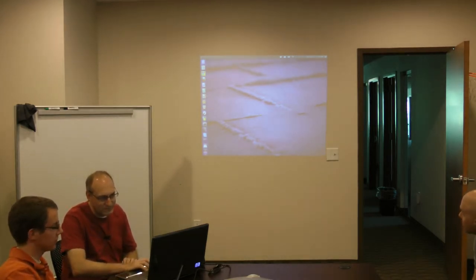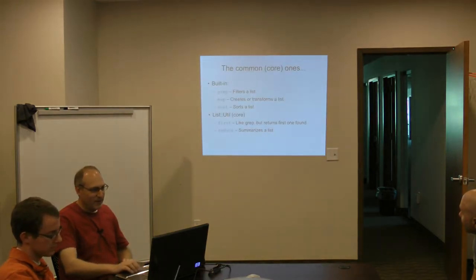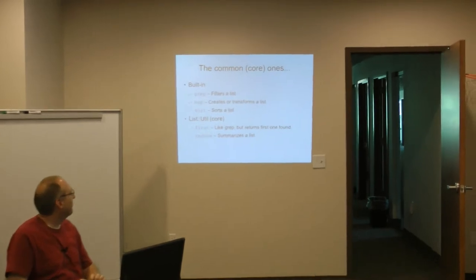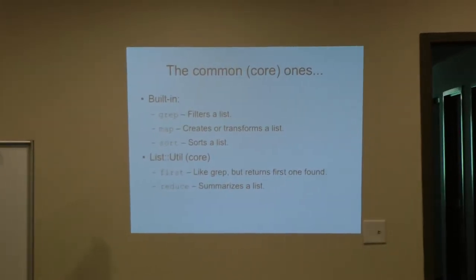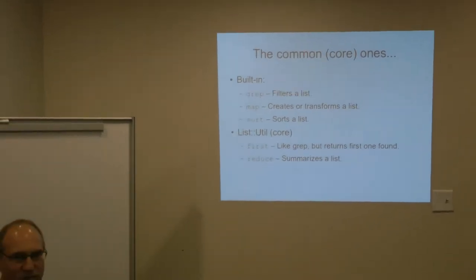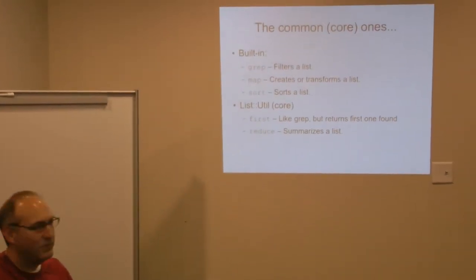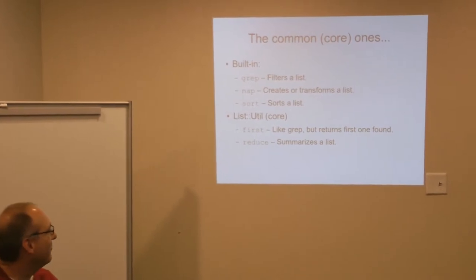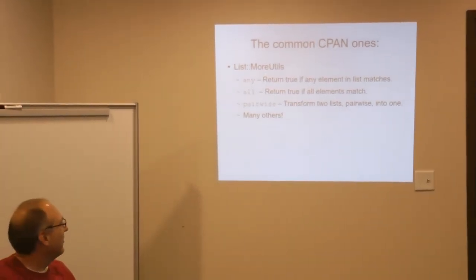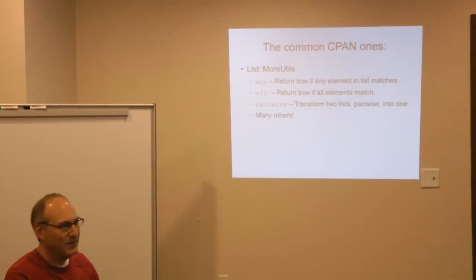Perl's functional functions. Functional functions are functions that take a callback or that take a code reference as one of their parameters. And so I wanted to look at some of the ones that Perl has: grep, map, sort, and then the list utilities module is part of the Perl core. So we can look also at some of the functional functions in that module as well, such as first and reduce. Additionally, if there's time, we can also look at some of the more interesting functions in list more utils, which is almost ubiquitous enough that it ought to be in core, but it isn't. It can be downloaded from CPAN.